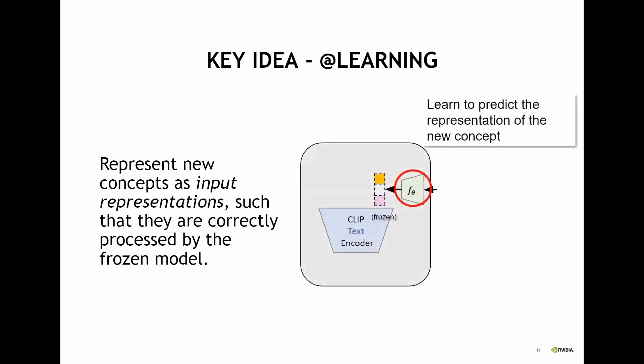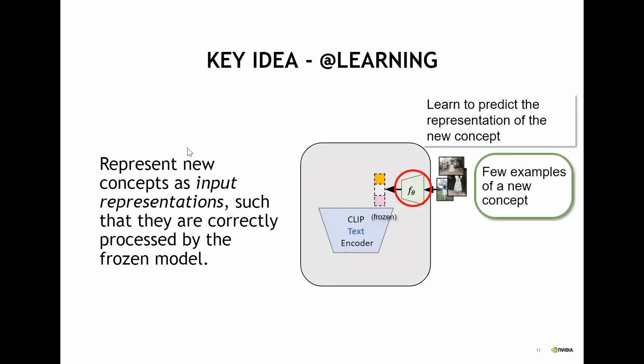We use CLIP exactly as is, but we insert some tokens that represent a word the model never learned during training — a new word we invent for our concept. We have this function F-theta which learns to predict this kind of word. So given a few examples of a woman wearing a skirt, we use F-theta to tokenize this specific skirt concept. Then we can join this concept with a description such as 'on the deck with my skirt' and use the CLIP text encoder as usual.